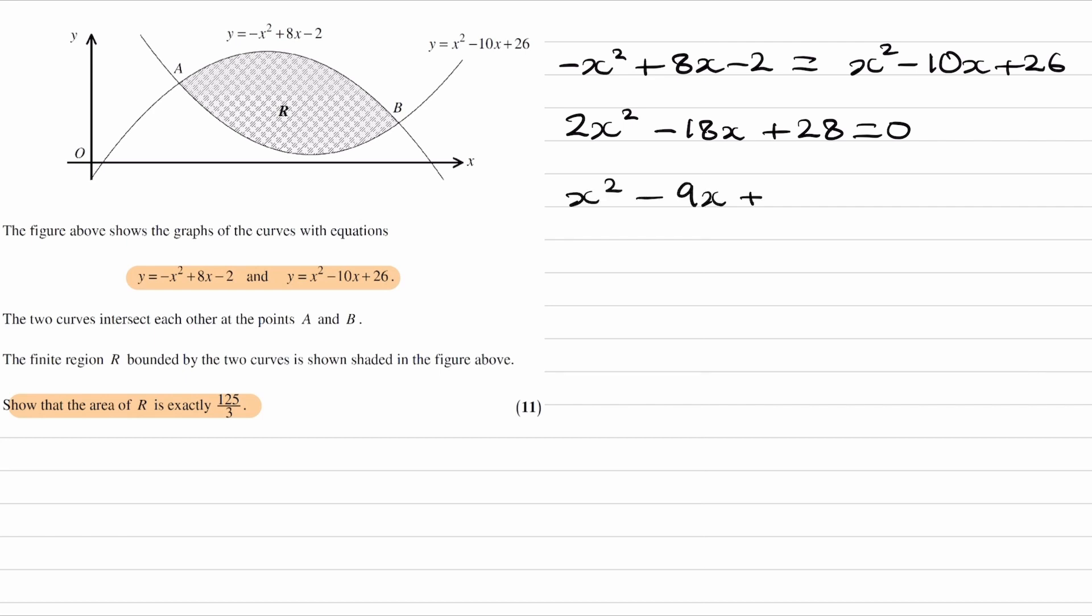Divide by 2, factorize two things that times together to give 14 and add together to give minus 9. And then we get x is 2 and x is equal to 7. So the x coordinate for point A must be 2, and for B must be 7.